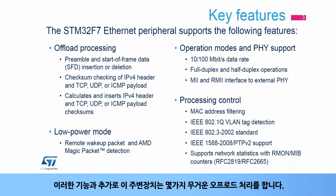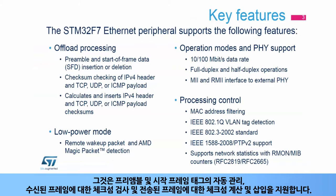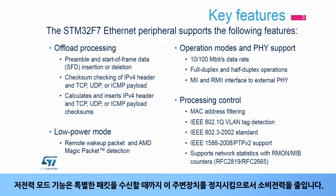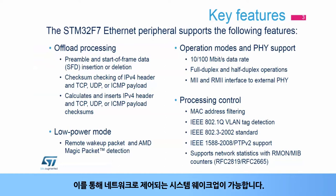In addition to the previous features, the peripheral brings several types of heavy processing offloading. It supports automatic management of preamble and start of frame tags, checksum checking for received frames, and checksum computation and insertion for transmitted frames. A functional low-power mode reduces power consumption by stopping the peripheral until special packets are received, enabling a network-controlled system wake-up.